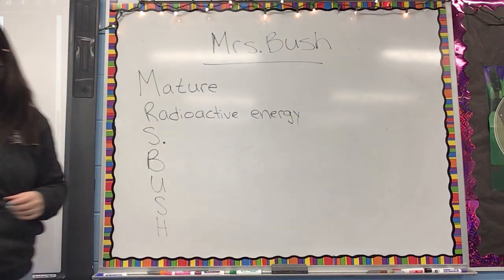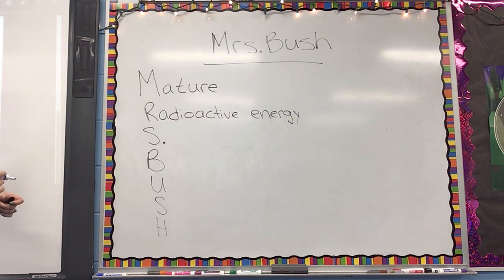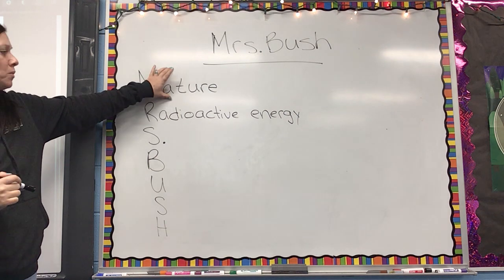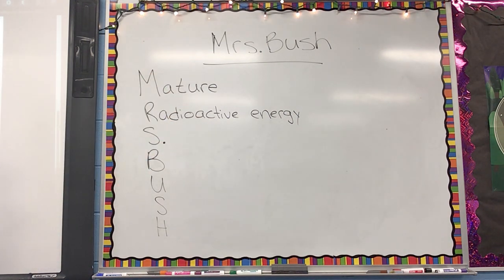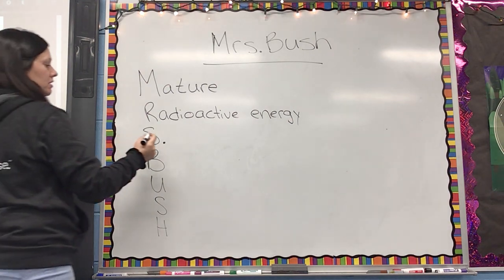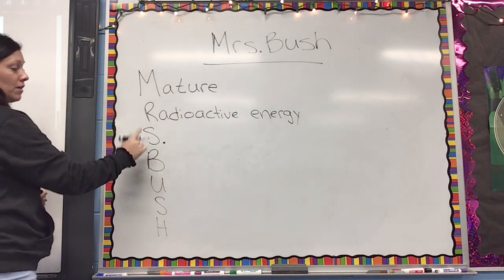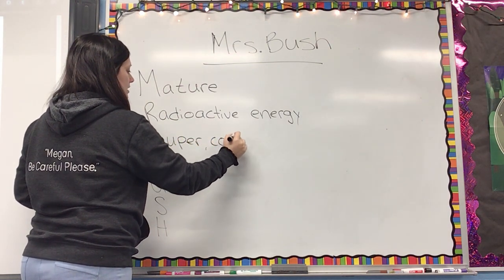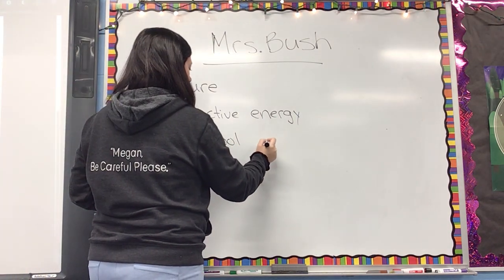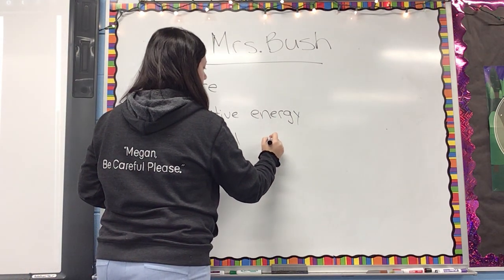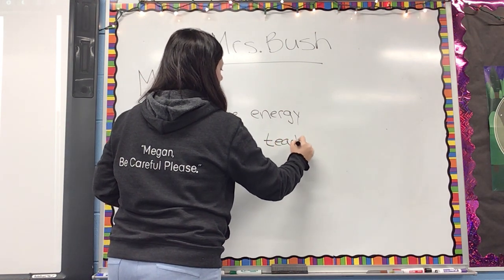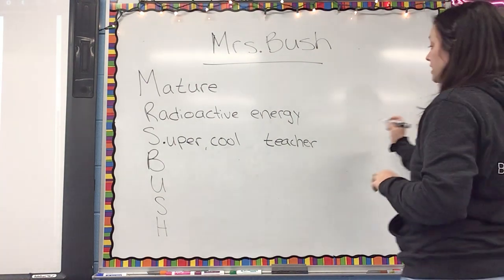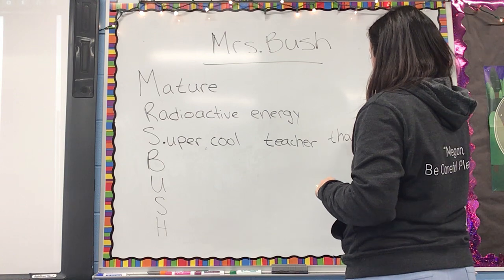Mimi says 'Super cool teacher.' Now remember, you could say 'Super, cool teacher' — I'm going to use a comma between those two adjectives, that's my preference. And you can make this sentence as long or short as you would like. So you could say 'Super cool teacher that I have,' and then it kind of makes it a whole sentence. For B, Aiden says 'Best fifth grade teacher.' That's right.